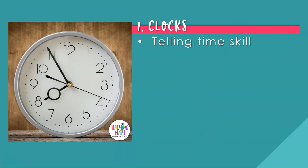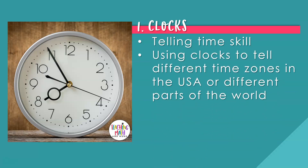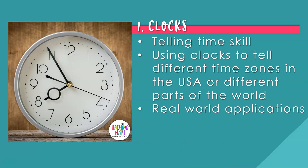Number one: clocks. You can use clocks in your classroom to tell time and practice reading the time with an analog wall clock. You can use multiple clocks to represent different time zones in the United States or in different parts of the world, making real world connections about what time it is in another part of the world. Making math more meaningful and relevant to students in their daily lives is helpful.